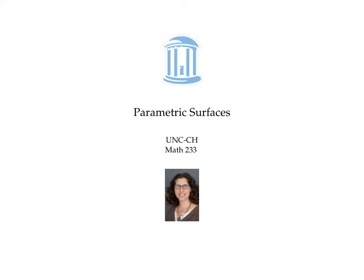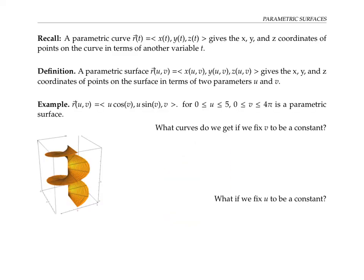This video is about parametric or parameterized surfaces. Recall that a parametric curve r of t equals x of t, y of t, z of t gives the x, y, and z coordinates of points on the curve in terms of another variable t. A parametric surface r of u, v equals x of u, v, y of u, v, z of u, v gives the x, y, and z coordinates of points on the surface in terms of two parameters, u and v.